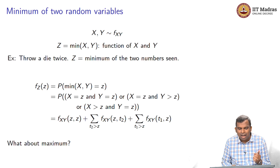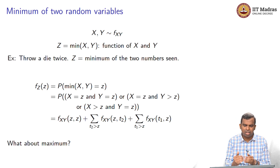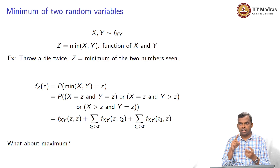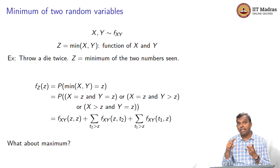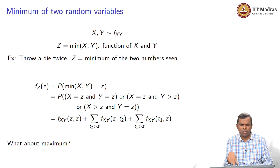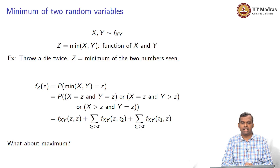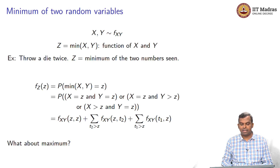What about maximum? You can repeat the same thing for maximum. For max of Z equal to z: X can equal z and Y can equal z; or X equals z and Y is strictly less than z; or X is strictly less than z and Y equals z. I am not writing it again — please go through the exercise and write it for max. Once you know the min, extending for the max is not too hard.